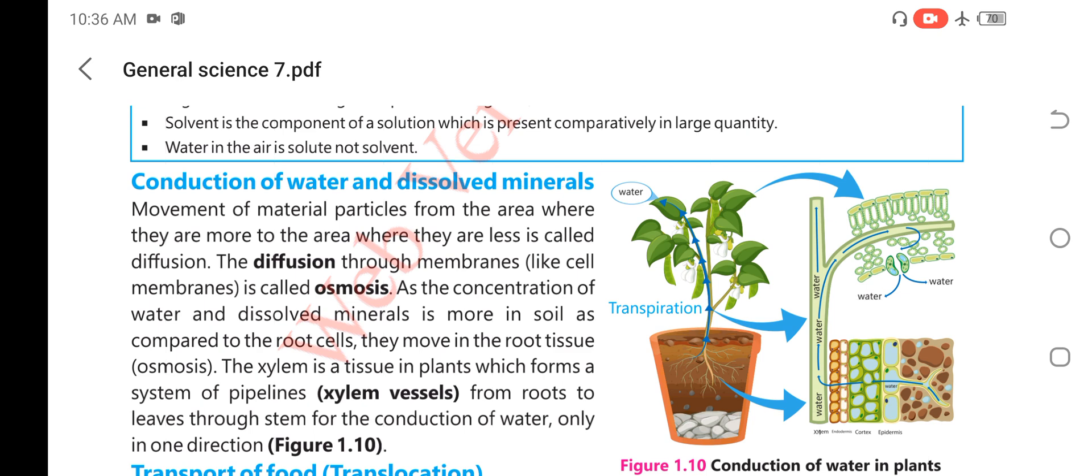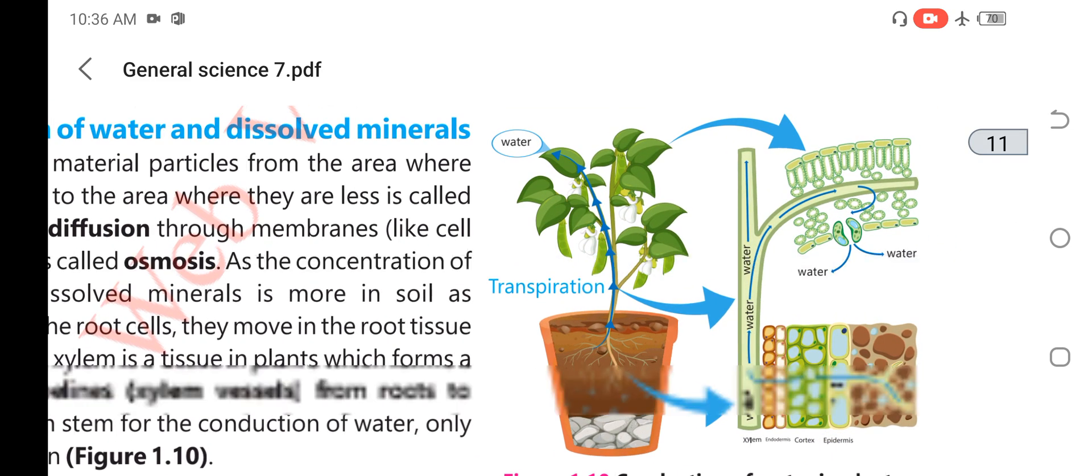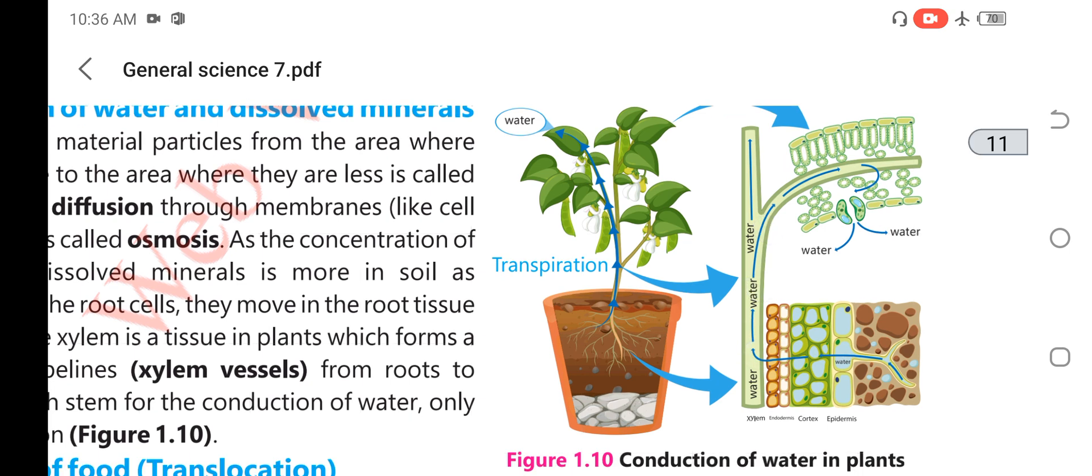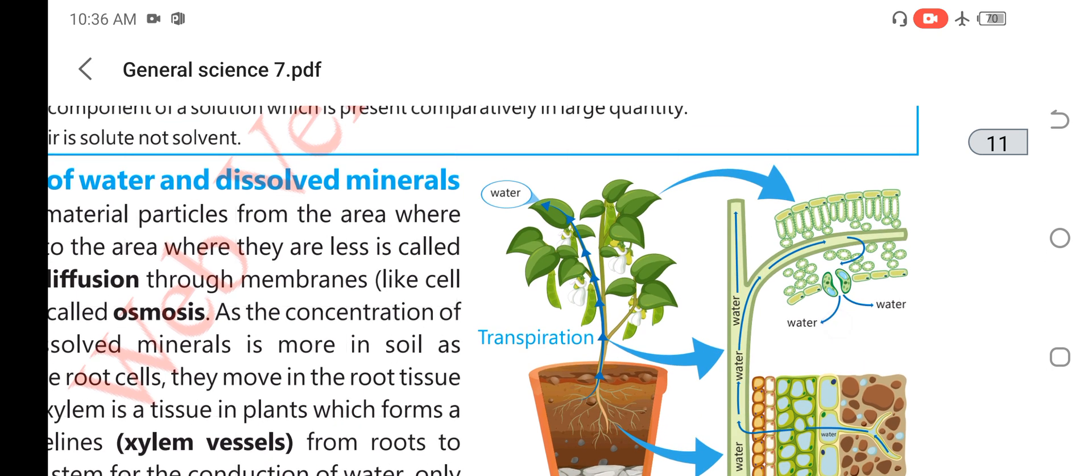First of all, from the soil to absorb water, then it is transported to the epidermis, then it is transported to the cortex, endodermis, and then xylem tissues. Xylem carries this water to the stem and also to the leaves.